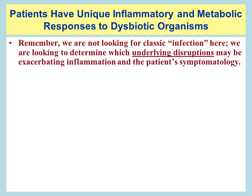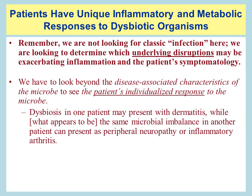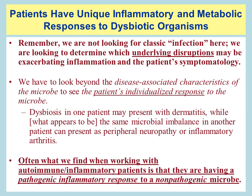Patients often have unique inflammatory and metabolic responses to dysbiotic microorganisms they're exposed to or harbor — on their skin, in their sinuses, or gastrointestinal tract. We're not looking for classic infection here; we're looking to determine which underlying disruptions may be exacerbating inflammation, especially when working with autoimmune conditions. We have to look beyond the disease-associated characteristics of the microbe to see the patient's individualized response. Dysbiosis in one patient may present as dermatitis, while the same microbial imbalance in another patient may present as peripheral neuropathy or inflammatory arthritis.